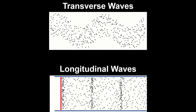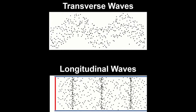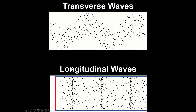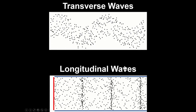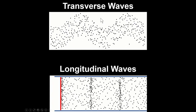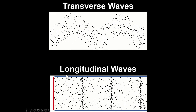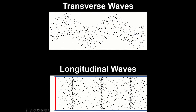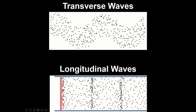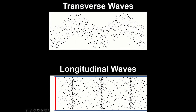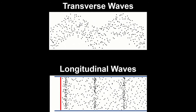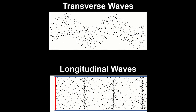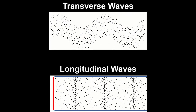I'm going to talk about polarization of waves. There are two kinds of waves: transverse waves and longitudinal waves. Transverse waves have crests and troughs, while longitudinal waves have compressions and rarefactions. Polarization only occurs with transverse waves, not longitudinal waves.